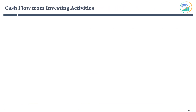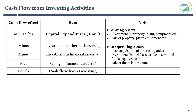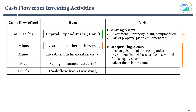Now let's understand how a company prepares cash flow from investing activities. Company investments are divided into two categories: operating assets and non-operating assets. Operating assets include investments in property, plant, equipment, and machinery required for normal business operations — these are added or subtracted depending on purchase or sale, and are called capital expenditure. Non-operating assets include investment or sale of financial assets such as fixed deposits, mutual funds, and equity shares of other companies. Note that investing activities also includes acquisition of other businesses if done in cash; acquisitions done via share exchange are reflected in financing activities.